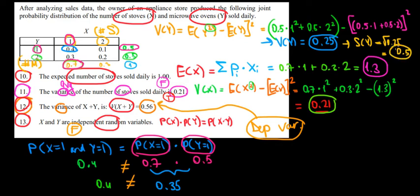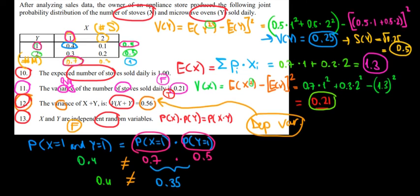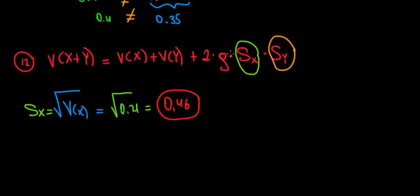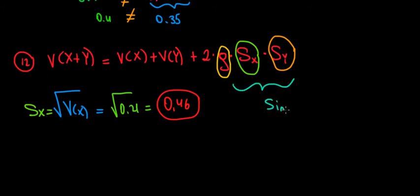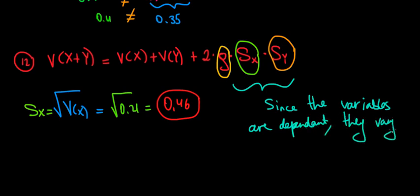So we've found the standard deviation of Y and the variance of Y. What else do we need? The correlation — and that's going to be the hardest thing to find. To calculate the correlation, we're going to use the covariance. Since the variables are dependent, they vary together; they don't move in different directions randomly, they move in a specific pattern. That's why they co-vary. So we must calculate the covariance.